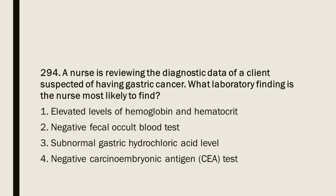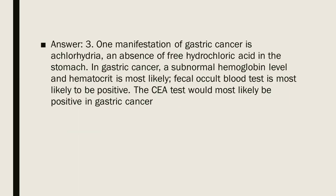Question 294: A nurse is reviewing the diagnostic data of a client suspected of having gastric cancer. What laboratory finding is the nurse most likely to find? 1. Elevated levels of hemoglobin and hematocrit. 2. Negative fecal occult blood test. 3. Subnormal gastric hydrochloric acid level. 4. Negative carcinoembryonic antigen (CEA) test. Answer: 3. One manifestation of gastric cancer is achlorhydria, an absence of free hydrochloric acid in the stomach. In gastric cancer, a subnormal hemoglobin level and hematocrit is most likely, fecal occult blood test is most likely to be positive, and the CEA test would most likely be positive.